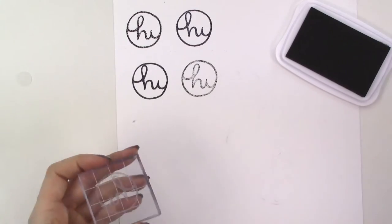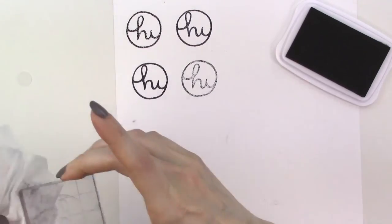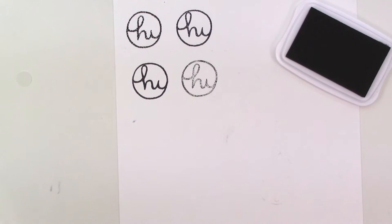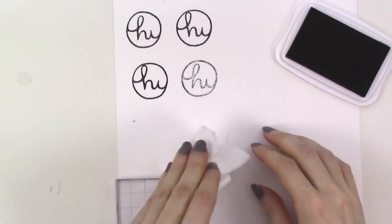I did watch a couple of other videos and they suggested either lightly sanding or using an eraser over the surface of the stamp material before cutting it to make the surface less slick. I didn't try either of these things but they might be something that you want to try.